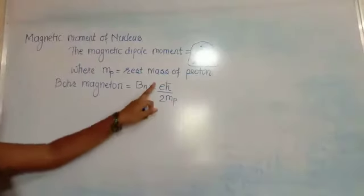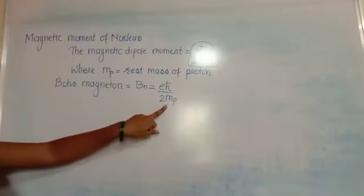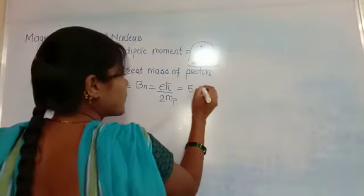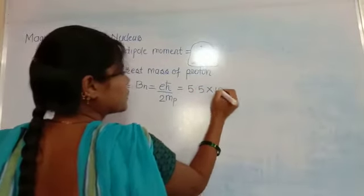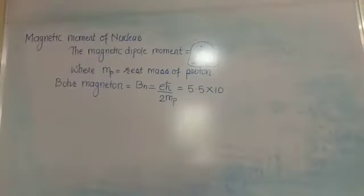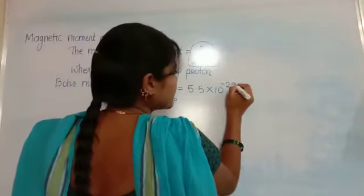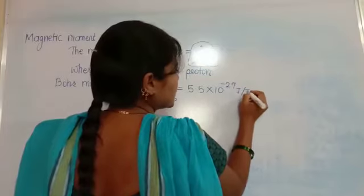When we substitute all the values of eħ/2mₚ we get the value 5.5 × 10⁻²⁷ joule per tesla.